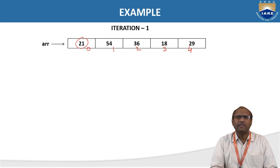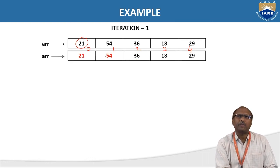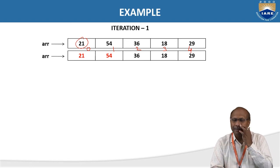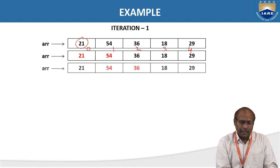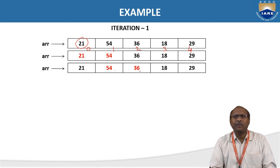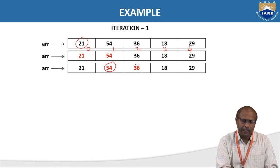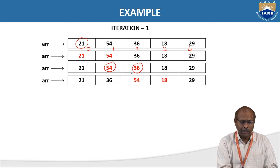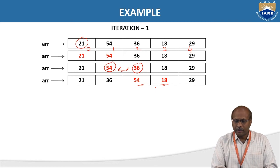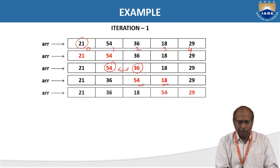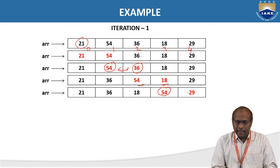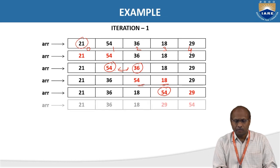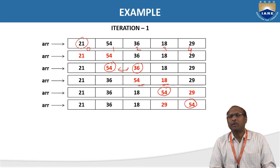Observe step by step. First, comparing 21 with 54: 21 is smaller, no need to swap. Always compare the first with the next, first with second. Then compare second with third: 54 with 36. 54 is bigger than 36, so it will swap. 54 has come to this position — these two have interchanged. Now compare 54 with 18; after comparing, 54 moves forward. Then compare 54 with 29 and swap. At the end of the first iteration, 54 has gone to the end.